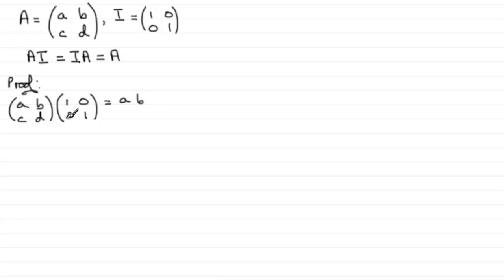Then bottom row times first column: C times 1 plus D times 0, which gives us C. And finally bottom row times the end column: C times 0 is 0 plus D times 1 which is D. So you can see we get back the matrix A.